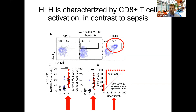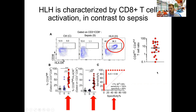We focused on CD8 T cells partly because of our preclinical studies. While we saw similar activated populations in CD4 T cells, quantitating the highly activated CD8 T cells compared to highly activated CD4 T cells showed that in most patients there were many more activated CD8 T cells circulating — very highly skewed toward CD8. This really validates our predictions from the animal models — exactly what we would expect.